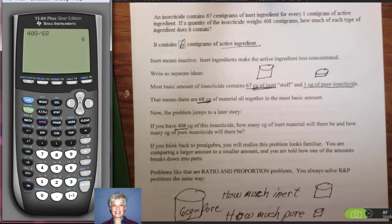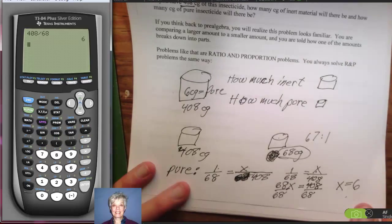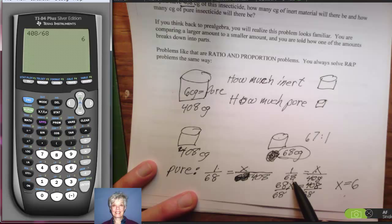Now, if somebody brings me a big clump of 408 centigrams of the same exact kind of insecticide, we're going to have the same ratio going on there of inert ingredients to active ingredients. So what do I do? Since 1 centigram out of the 68 total centigrams is active, that same ratio is going to be true with the 408. So we set it up like this. 1 centigram out of 68 centigrams is pure. I don't know how many centigrams out of 408 is pure.